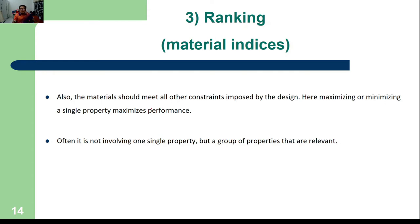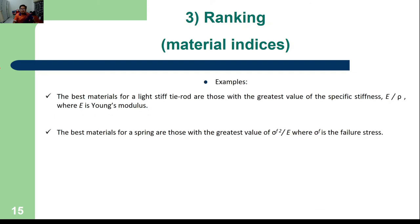When we maximize or minimize a single property, we maximize the performance function. Often it involves not just one property but a group of properties. For example, for the best material for a light, stiff tie rod, we prefer materials with the greatest specific stiffness — the value of Young's modulus E over its density.